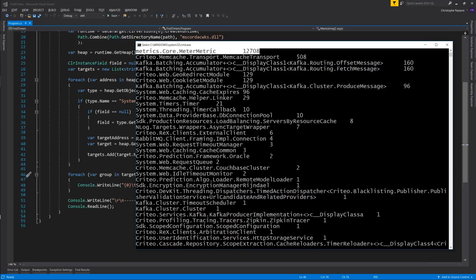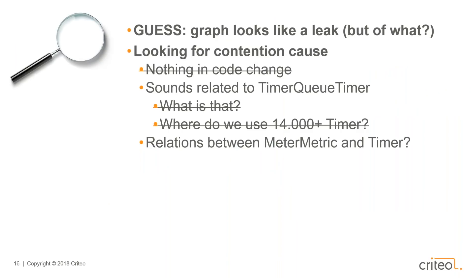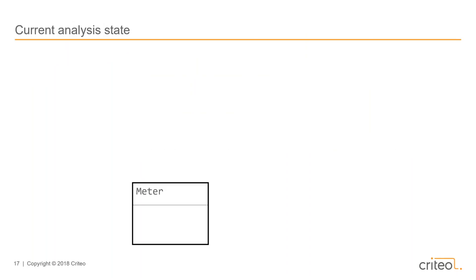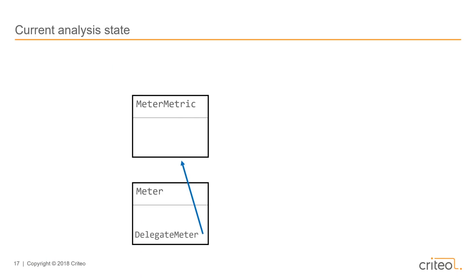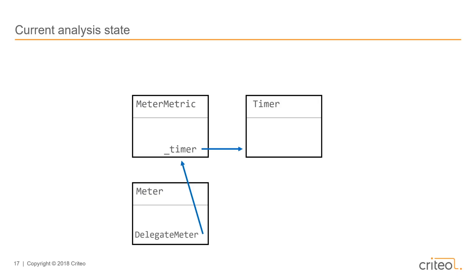Now we have the name of the type that is called. Now that we know the culprit, we still need to figure out what it is. It's a type used internally in the Criteo codebase. Just a quick drawing — nobody uses MetaMetric directly. Instead, they use a wrapper called Meta. The Meta declares one property, which is a delegate Meta, and it contains the instance of MetaMetric. MetaMetric declares one field, _timer, which contains an instance of a timer. When the timer ticks, it calls back a method on the MetaMetric.